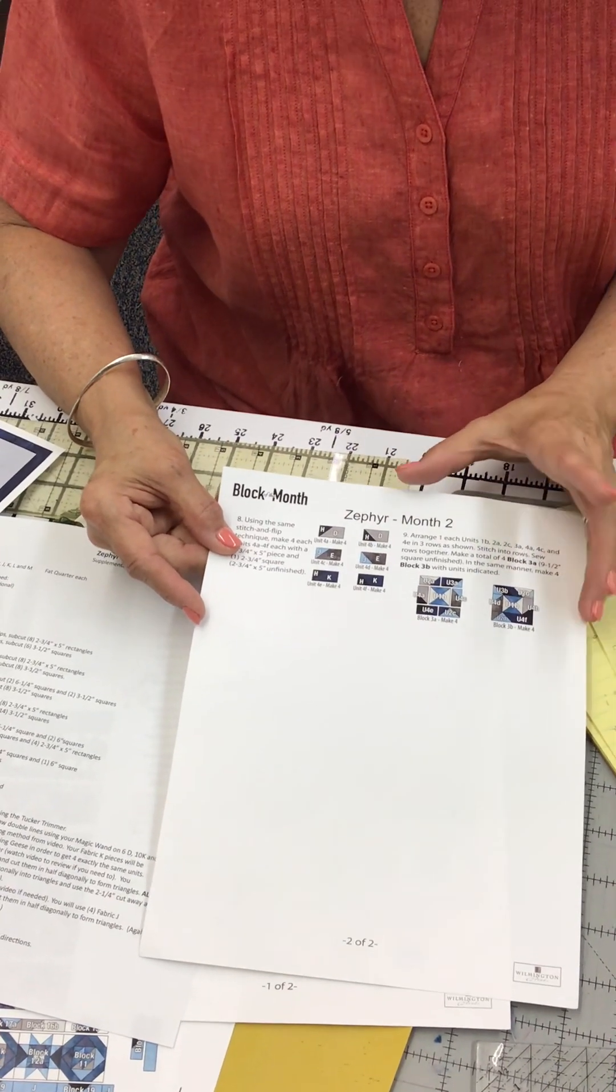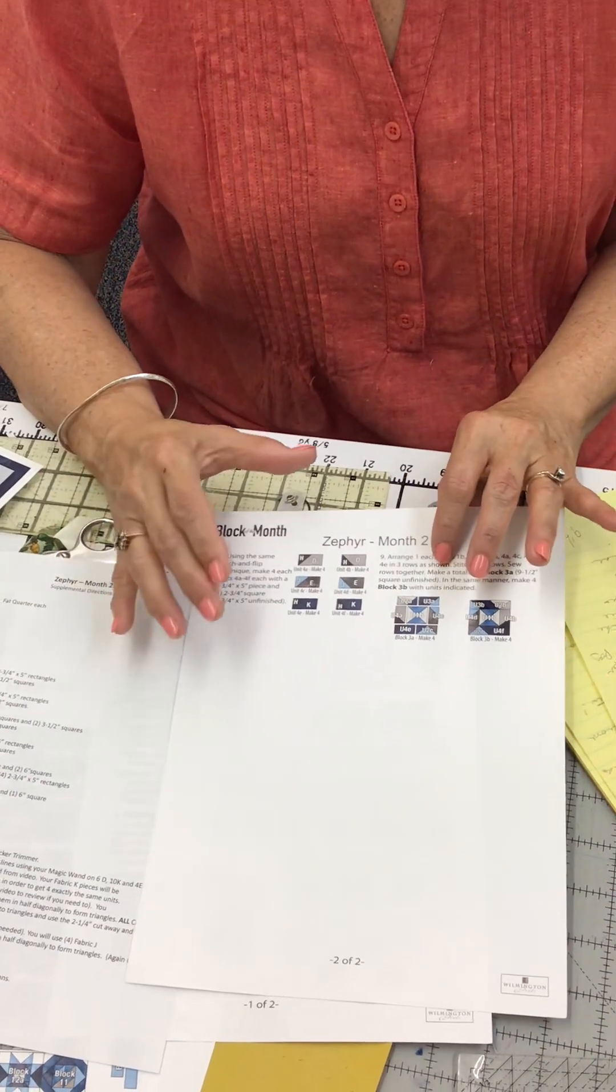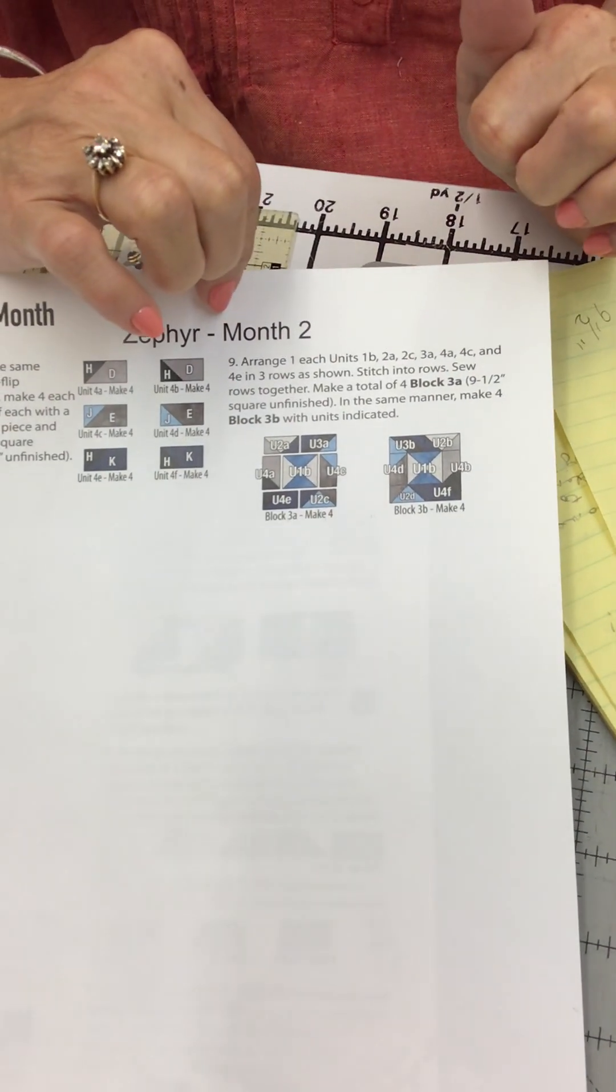Step nine is just sew it together. At this point, you should have perfectly sized units. Absolutely perfectly sized units because they've all been trimmed with either the tucker trimmer, the wing clipper, or the corner pop. So you should have perfectly sized units. So when you sew this together, if your unit doesn't measure nine and a half inches each of your blocks, then it means it was in your sewing together or it's in your pressing. So at that point, don't get frustrated. If it's not nine and a half inches, figure out where your mistake is. Your quarter inch seam is not correct or you haven't pressed well. So you should end up with four 3A blocks, four 3B blocks. They should all be nine and a half inches.